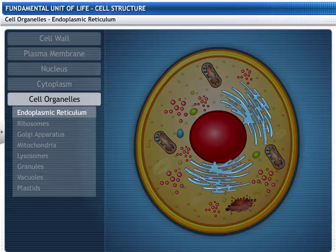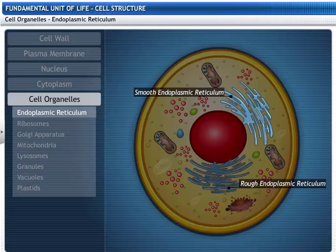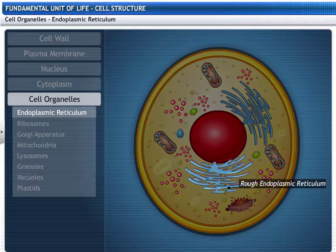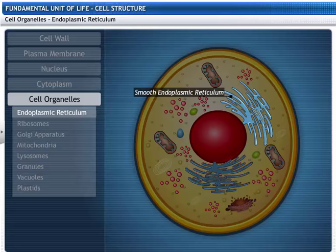There are two types of endoplasmic reticulum: rough and smooth. Rough endoplasmic reticulum has ribosomes present on it, while they are absent on smooth endoplasmic reticulum.